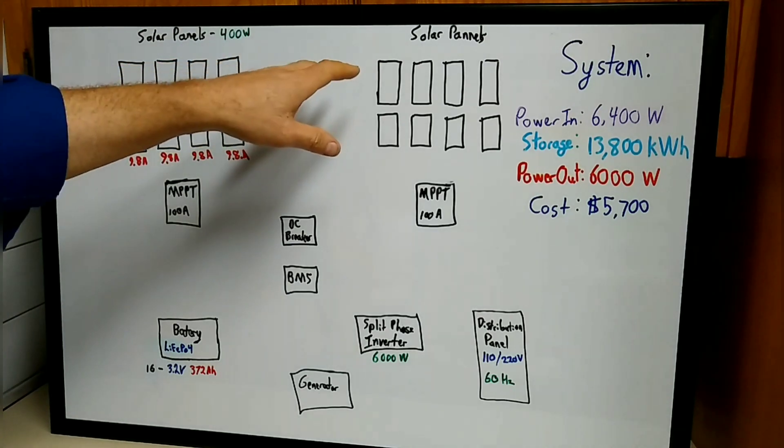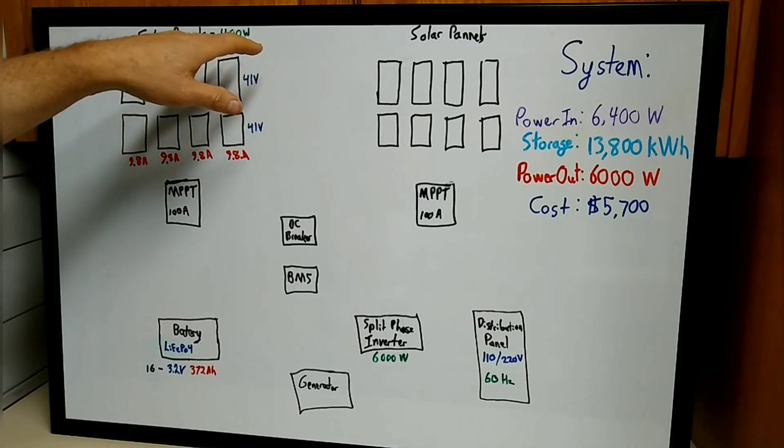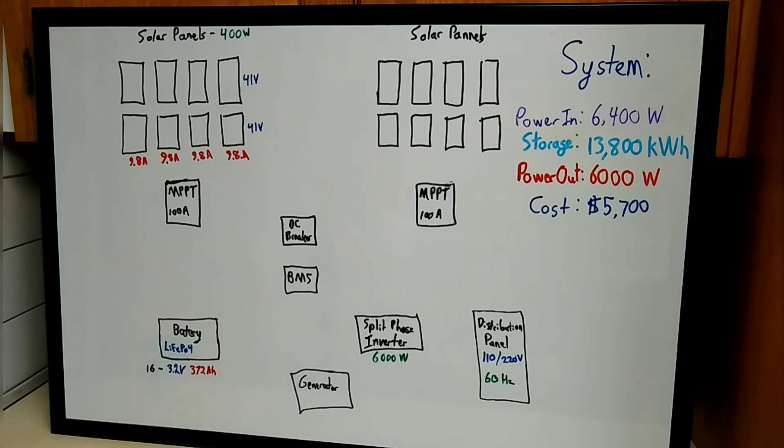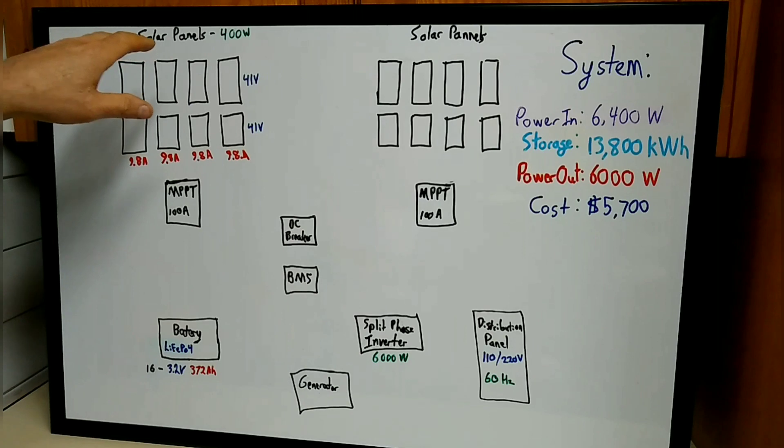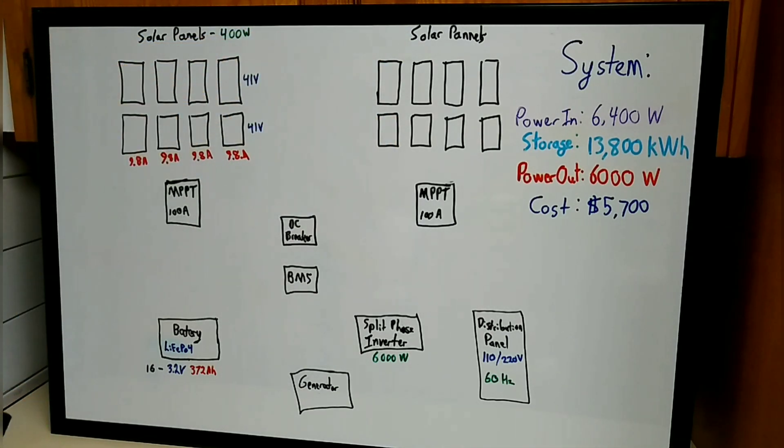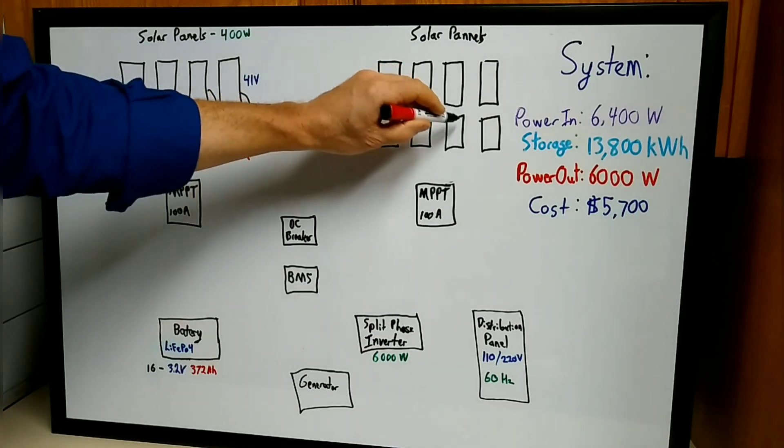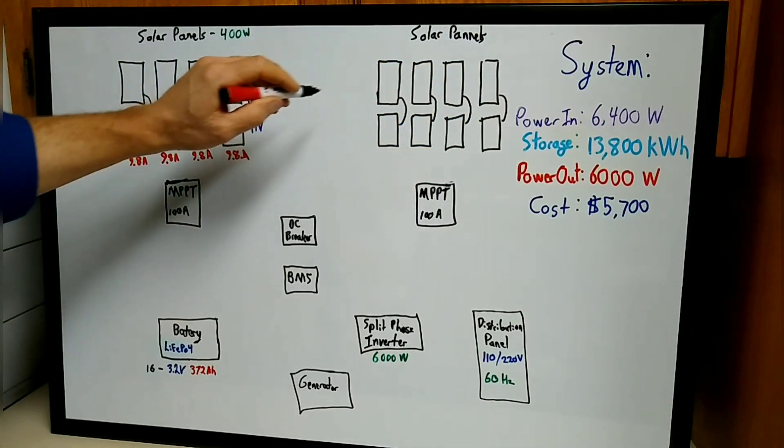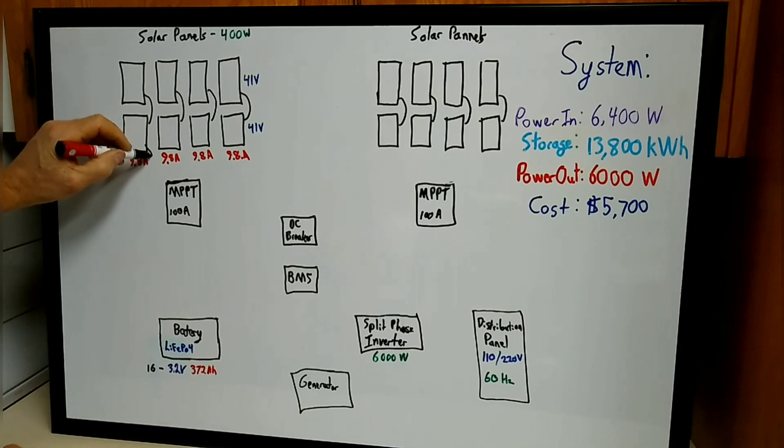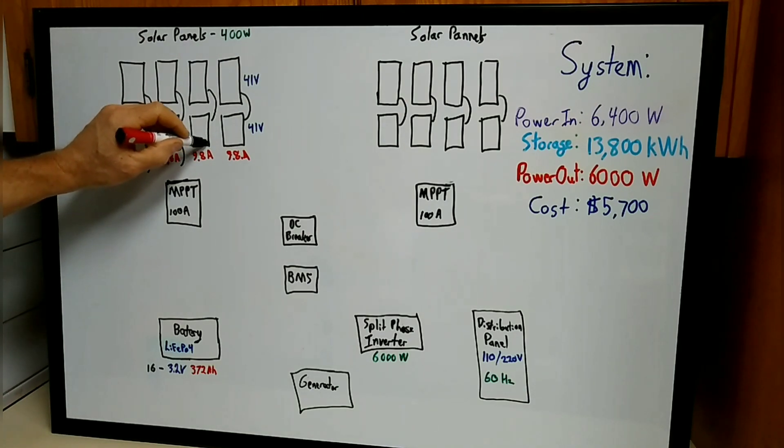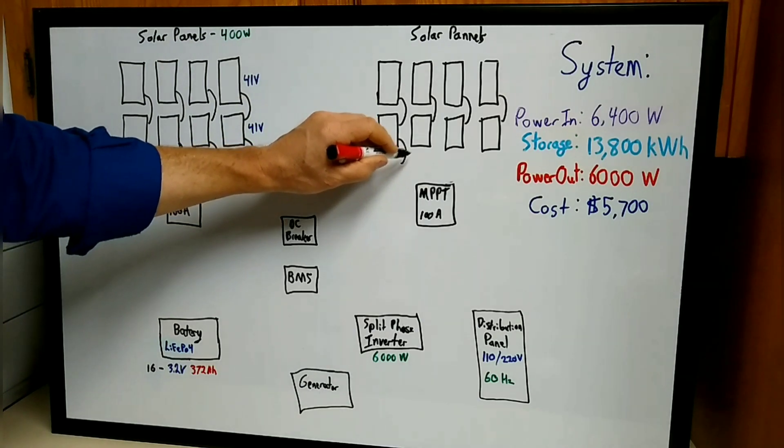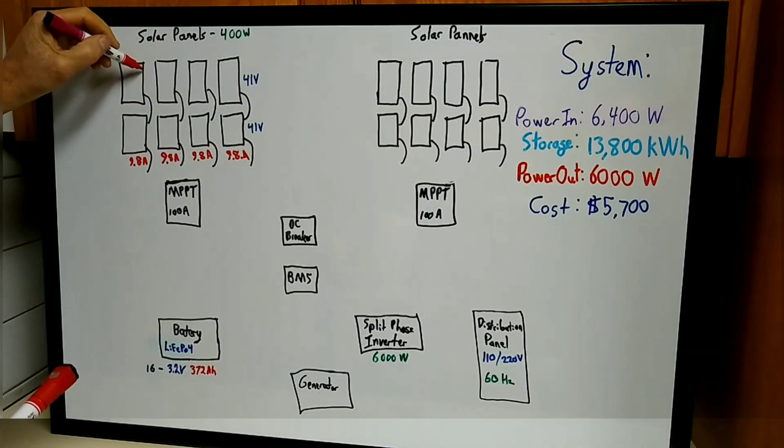So you multiply 400 by 16 to get 6,400 watts. That'll be the total watts coming into the house. I'm dividing those up into two arrays, two in series. In series means these two are connected like this. Each of the arrays will be two in series, four in parallel. I'm drawing out how they'll be wired together.